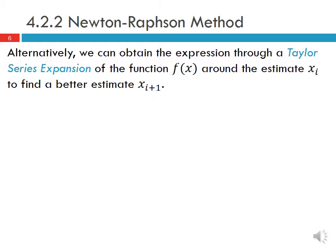We can also derive this formula using the Taylor series expansion. We have the Taylor series expansion of our function f of x around the estimate xi. We want to find a better estimate xi plus 1, so f of xi plus 1 is equal to f of xi plus f prime of xi times (xi plus 1 minus xi), plus order h squared representing the remainder of the Taylor series expansion.